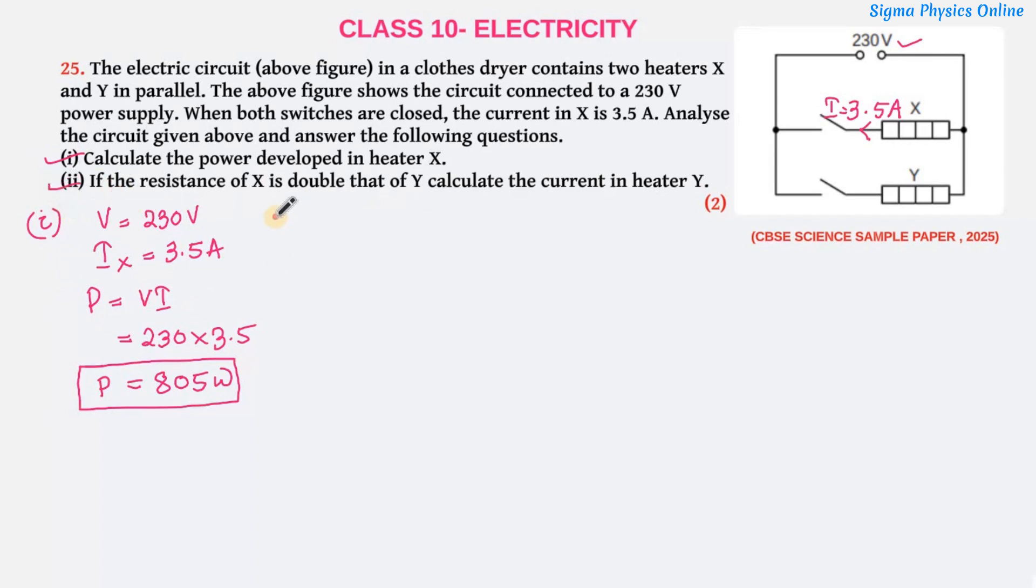Now this is the answer to the first question. Let's solve the second one. In the second question it asks if the resistance of X is double that of Y, we have to find out the current in heater Y.